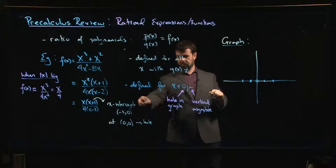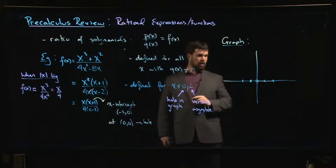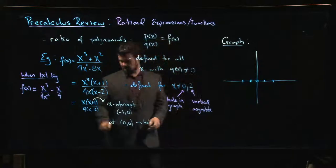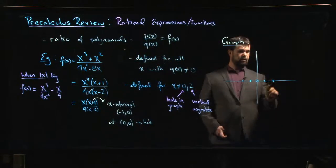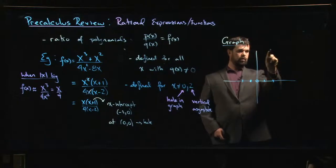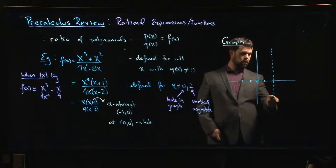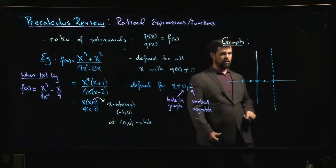The other thing we know is that there's a hole in the graph at zero zero, right, that's from this information here. Another thing that I know is that at minus two I have this vertical asymptote, so we draw those remember as sort of a dashed vertical line.